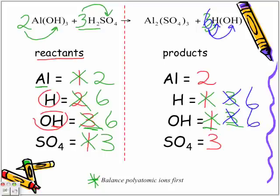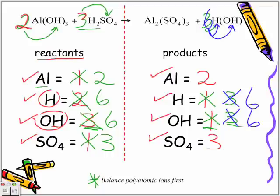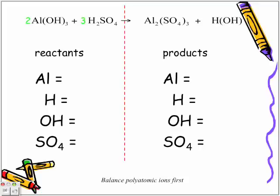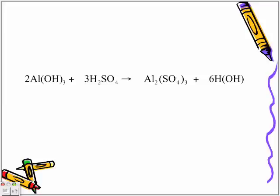If we compare our reactants and product side: aluminums both have two on both sides. Hydrogens have six on the reactant side and six on the product side. We have six hydroxides on the reactant side and six on the product side. And we have three sulfates on the reactant side and three sulfates on the product side. So the final coefficients are two, three, and six — we didn't need to change the middle compound. Now the last step: never leave it just like that. Rewrite the entire equation cleanly with the new balanced numbers in front.